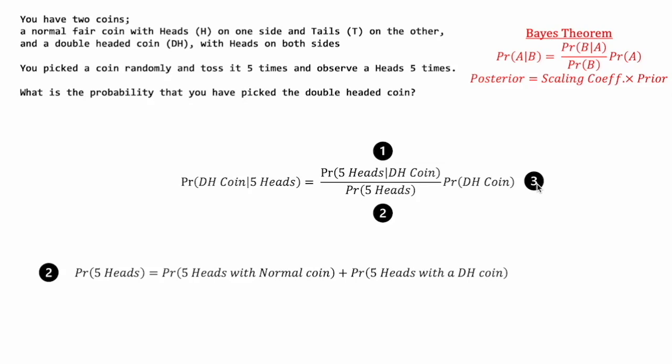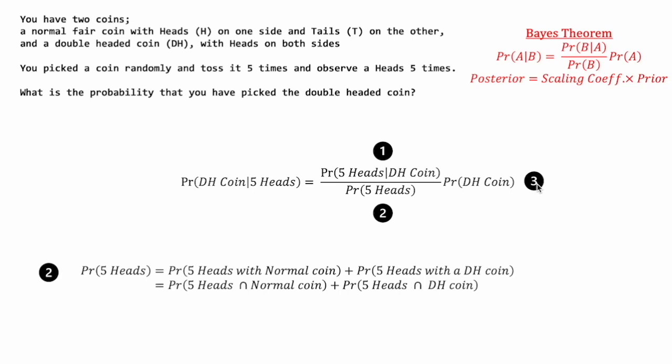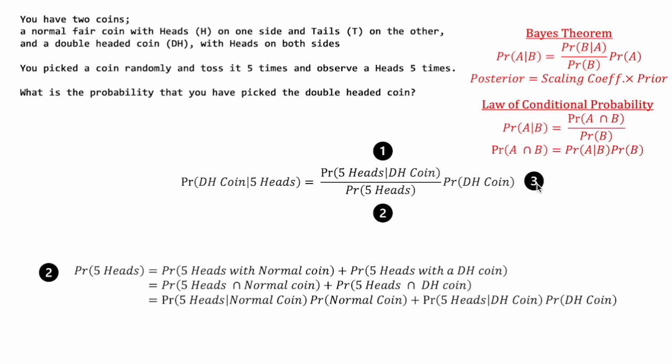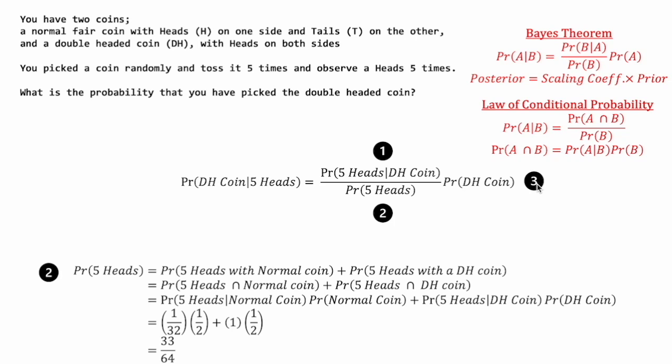For segment two, the probability of getting five heads is the probability of getting five heads with a normal coin plus the probability of getting five heads with the double-headed coin — that's it, because there is no other outcome involving five heads. In more mathematical terms, this is the probability of five heads intersected with drawing a normal coin, plus the probability of five heads intersected with drawing a double-headed coin. Using the laws of conditional probability, these terms are refactored into products, all of which we already have values for. Filling in these values, we get that the probability of getting five heads in general is 33 over 64.